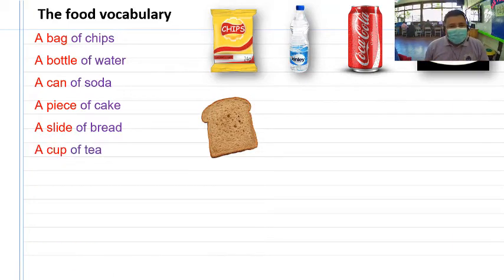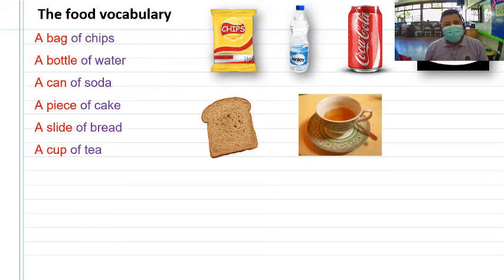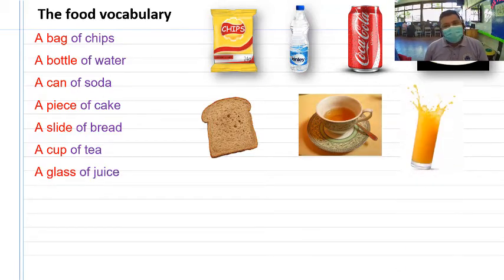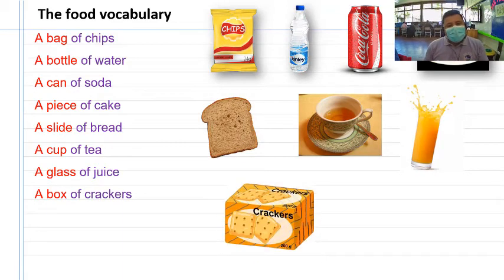A cup of, una taza de té. A glass of juice, un vaso de jugo. A box of crackers. Crackers viene siendo galletas, galletitas, galletas simples o pueden ser dulces. Una caja de galletas, en este caso crackers.